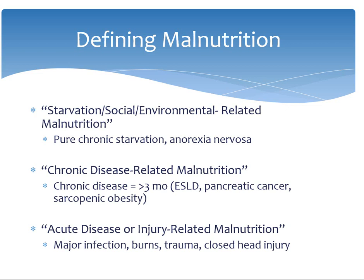The last type of malnutrition is the acute disease or injury related malnutrition, which is caused by major infections like sepsis, burns, traumas, and even closed head injuries. This is the type of malnutrition commonly caused by not providing adequate nutrition to patients in a hypercatabolic or critically ill state in the intensive care unit.